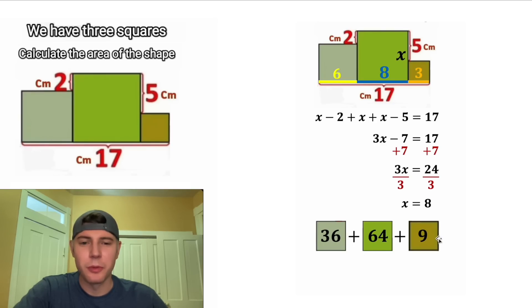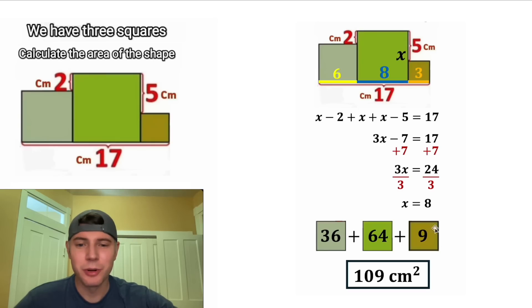And then 36 plus 64 plus 9 is 109. Let's give it a label of centimeters squared and put a box around it. And that's the answer to our question. The area of this shape is 109 centimeters squared. How exciting.